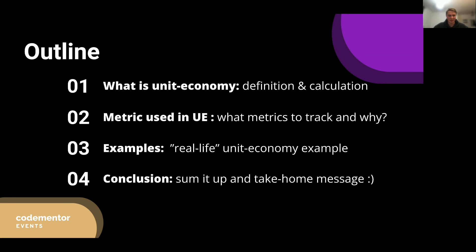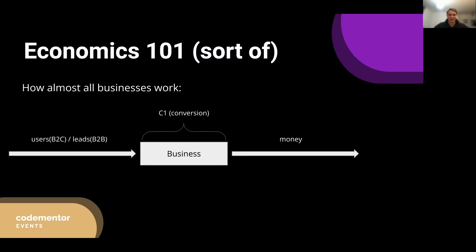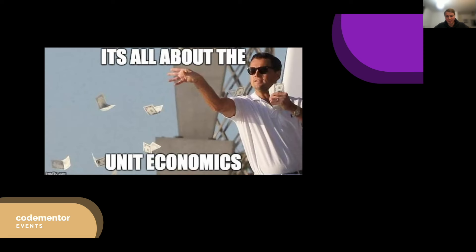So what is unit economics? Let's start with Economics 101 — how almost all businesses work. You have your users, whether it's B2C like an app, game, streaming service, e-commerce, etc., or leads in B2B if you work with other businesses. You have some business model, and then you convert your users or leads into money — hopefully as many as possible, though not all of them.